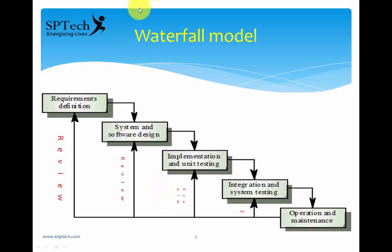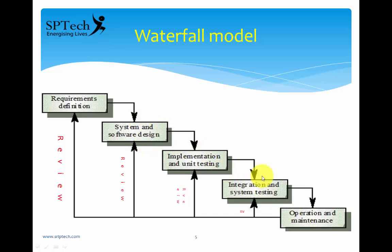The waterfall model was the first model actually proposed for the software development life cycle. This model is also called a linear approach model because it has a number of stages which are interlinked with each other: requirements definition, system and software design, implementation, integration, and operation and maintenance. It is called a linear model because the output of one stage becomes an input to the next stage. The progress is seen flowing steadily, like a waterfall from top to bottom.